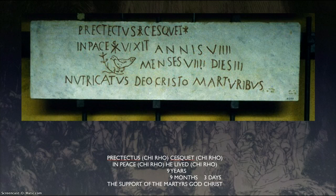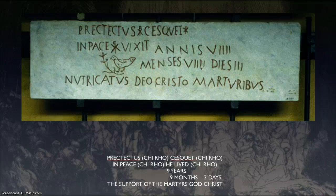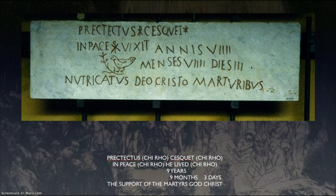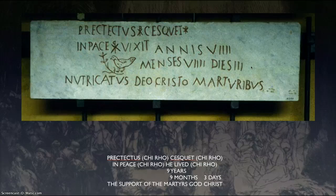One thing about the Christians was they respected the body of the dead because they knew that in the resurrection, that body would be resurrected. So there's a great love for the body itself and for their loved one. Usually there were inscriptions talking about the person's name, many times how old they were, and then some sort of blessing. This particular person was nine years, nine months, and three days old — so a nine-year-old, not quite ten. We don't know whether it was a martyr or just natural death. Childhood death was quite prevalent in Rome.